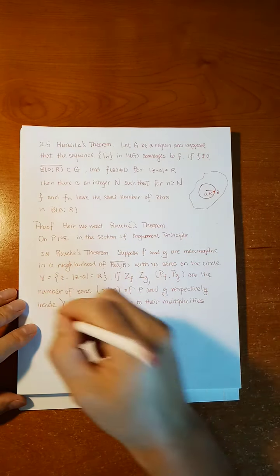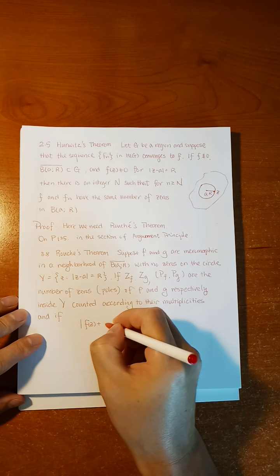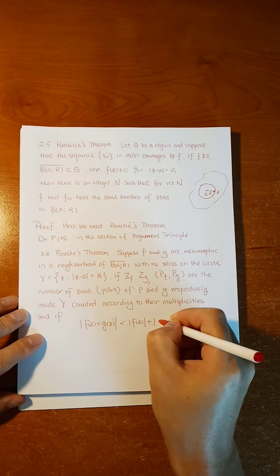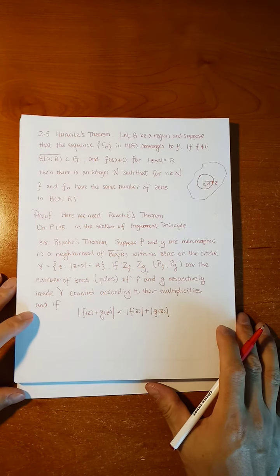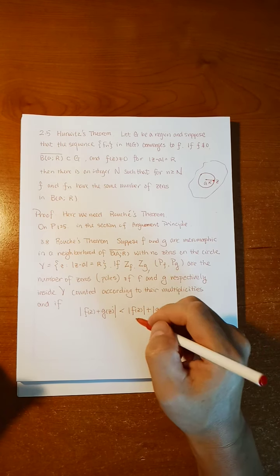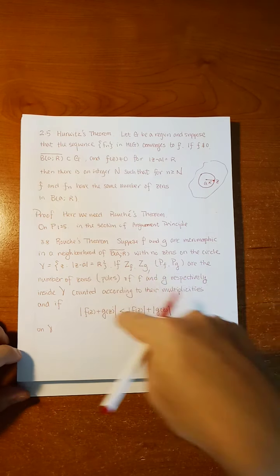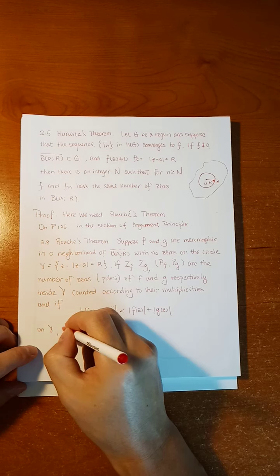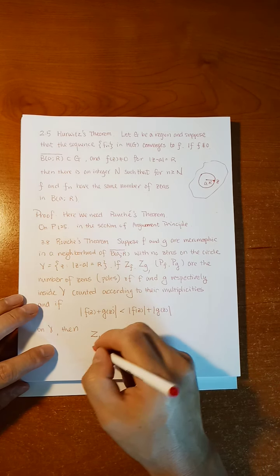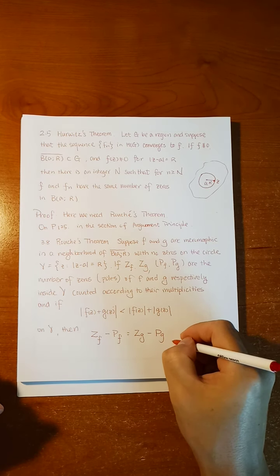The essential condition is: if |f(z) + g(z)| is strictly less than |f(z)| + |g(z)|. If you put an equal sign, it doesn't provide any special condition — that would just be the triangle inequality. The crucial thing is that there is no equal sign, and this condition only holds on the boundary gamma. If this holds, then Z(f) − P(f) = Z(g) − P(g).